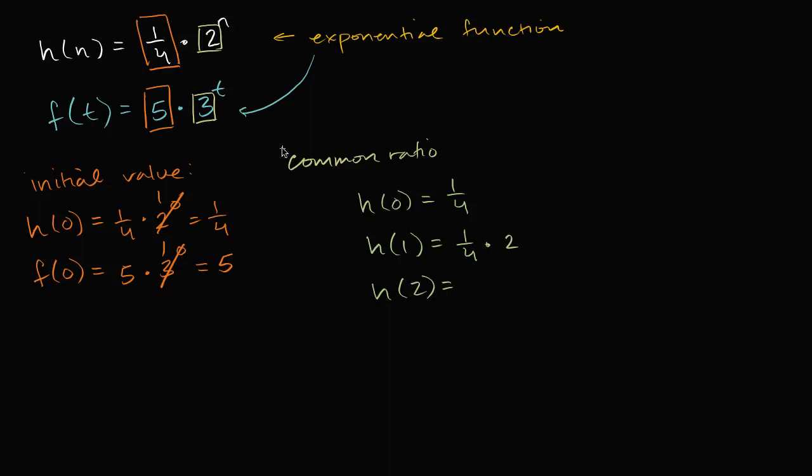Or we could just view this as two times h of one. And actually, I should have done this when I wrote this one out, but this we could write as two times h of zero. So notice, if we were to take the ratio between h of two and h of one, it would be two.